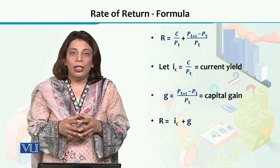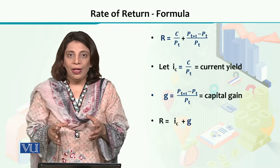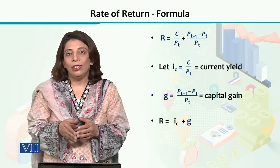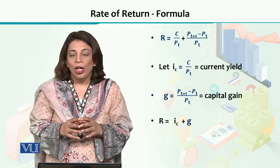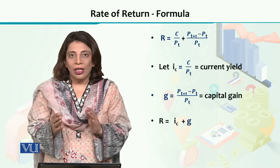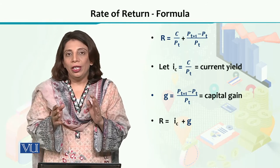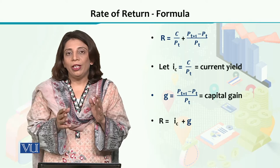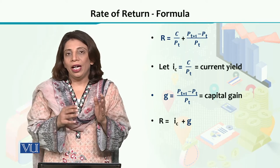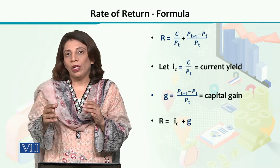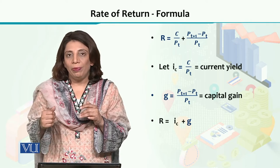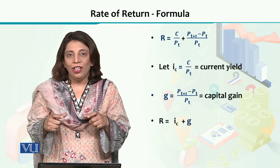If we analyze the components of the formula, we can break it into two parts. We can split this formula into two parts. If I take the C divided by P_t on one side and I separate P_{t+1} minus P_t divided by P_t, I can state that the return formula is a combination, is a sum of two different concepts.